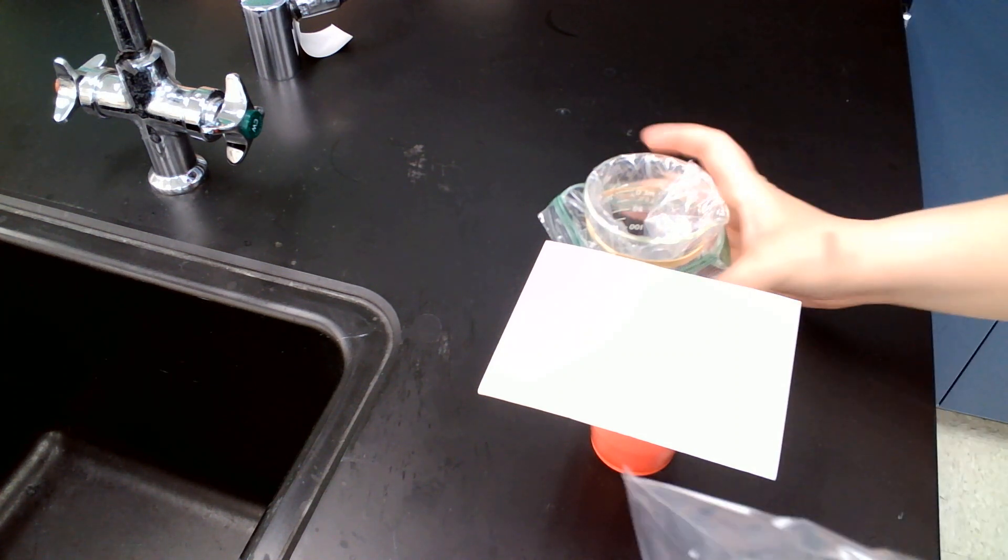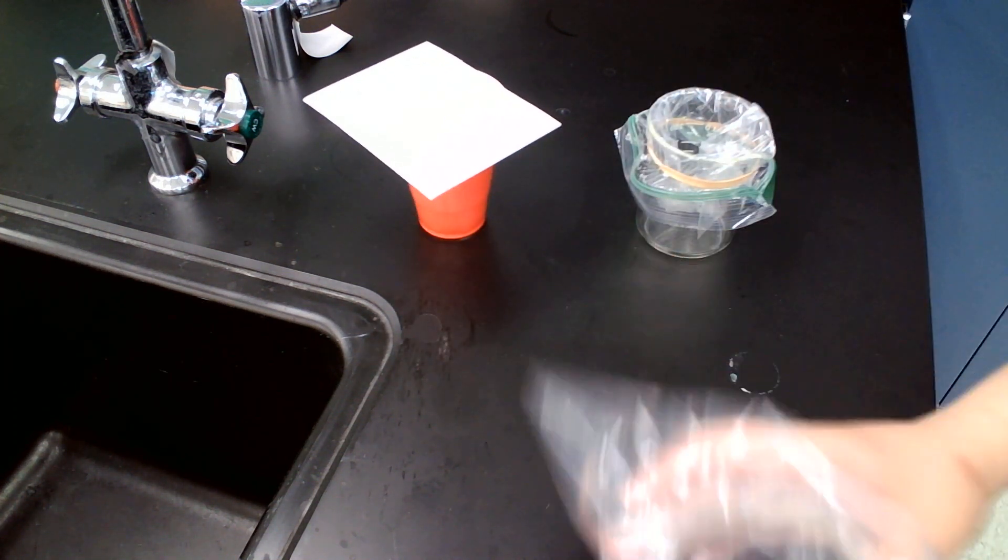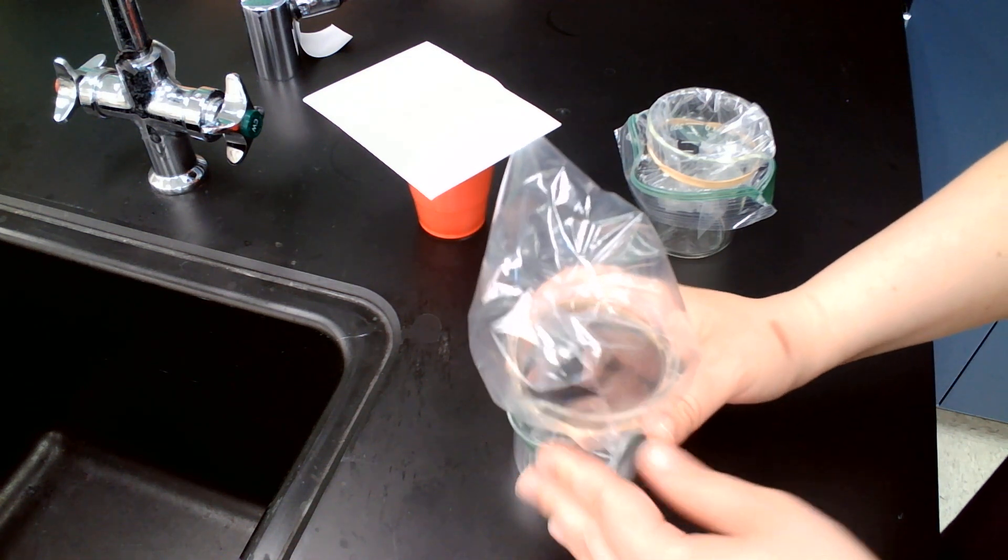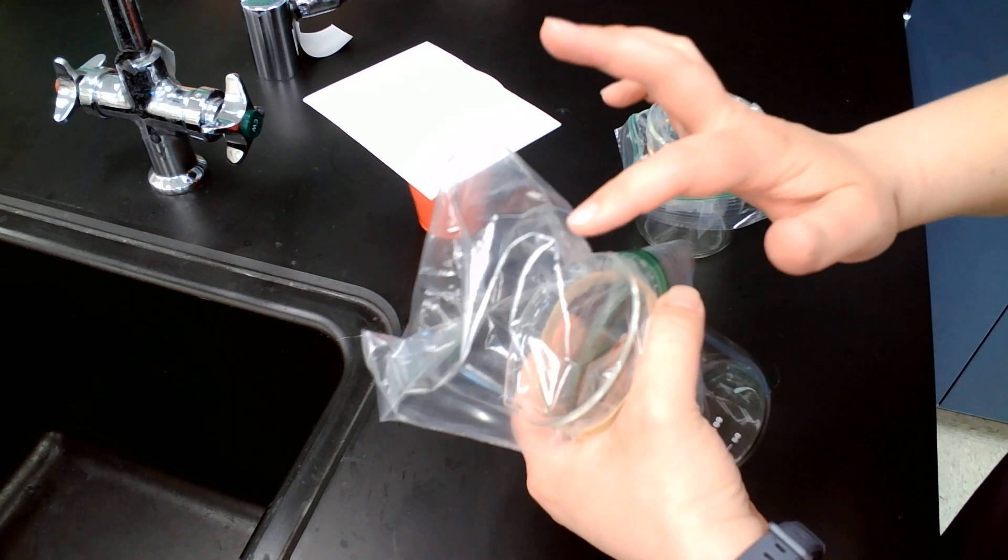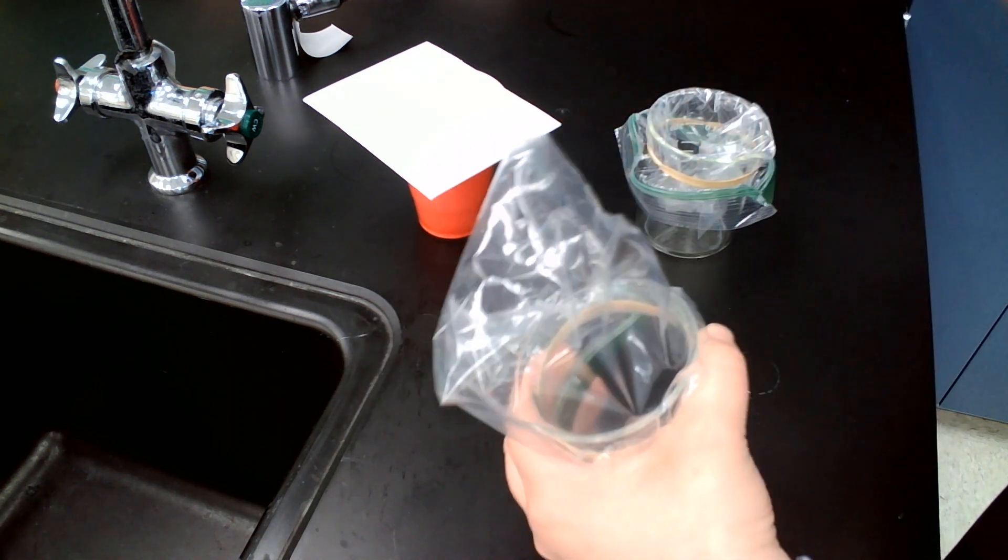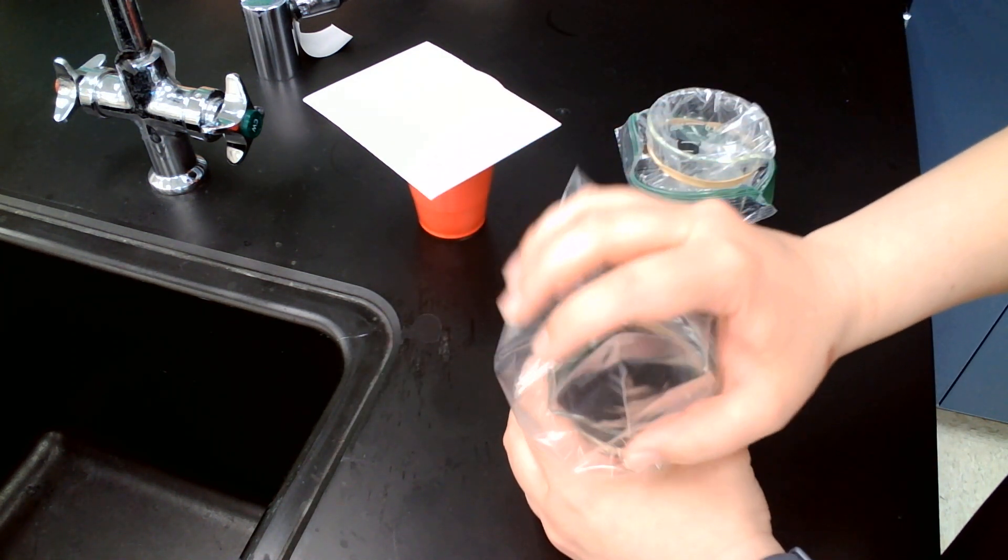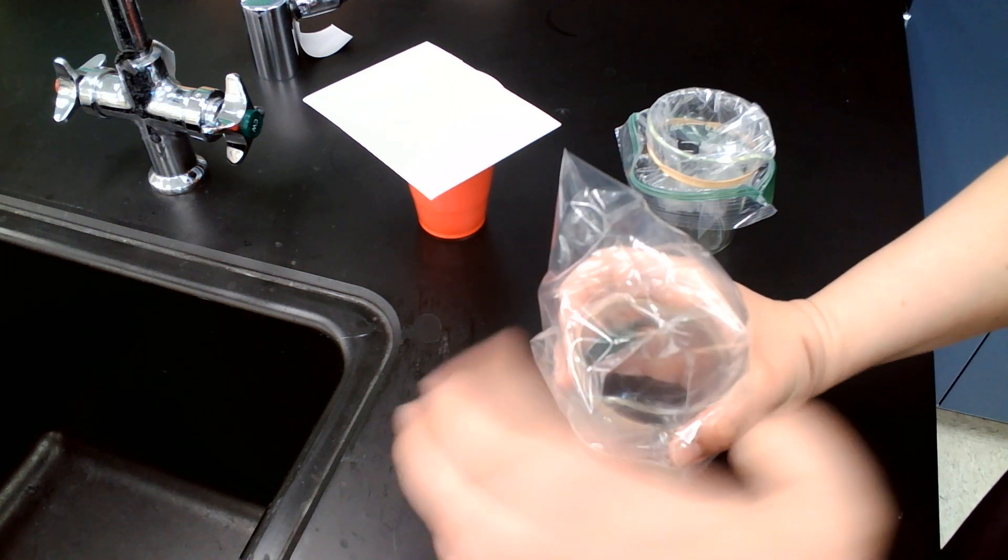So first I have these two beakers with baggies. Now this beaker was set up with the baggie outside and right now the pressure inside the beaker and baggie and outside are the same. So when I try to push down on the baggie, I can't push it into the beaker.